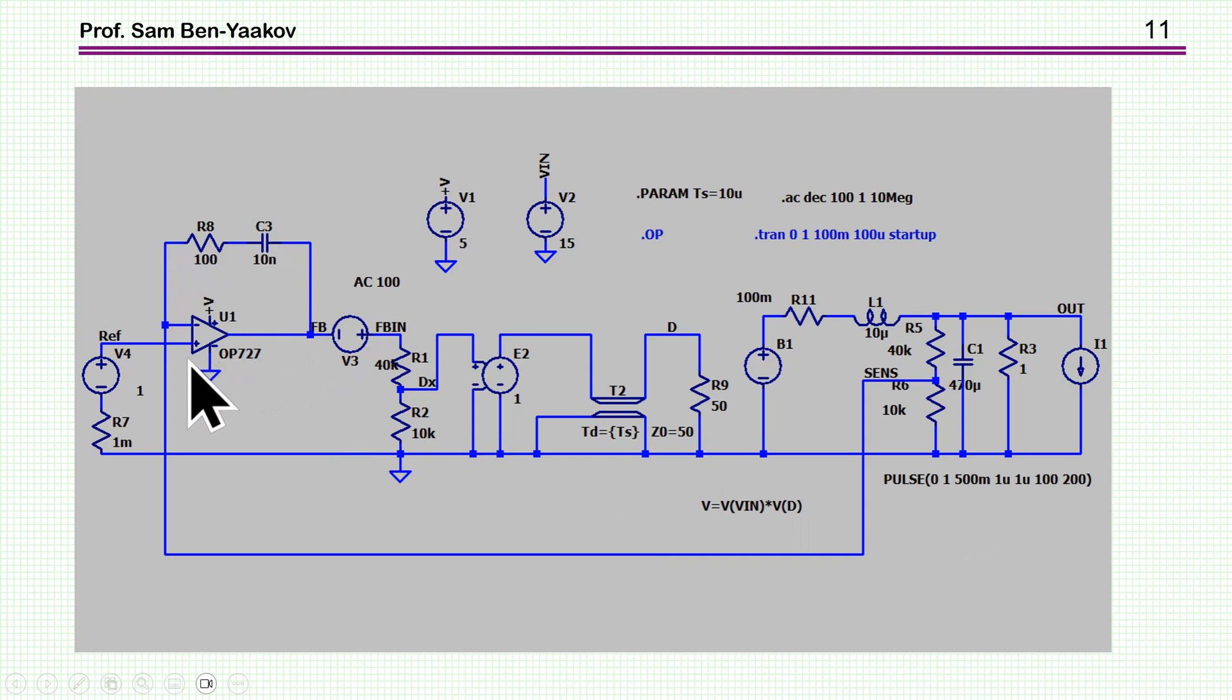This is a current source for a step. So we have a step load here of 1 amp, a short step. And then I have here the amplifier or the error amplifier, that's the compensator. Now, I didn't go into a very fancy phase compensation. This is a type 1, just a lag type compensator. Bandwidth will be limited, but it's okay just for the demonstration. So I have here an amplifier, which is set from 5 volts.